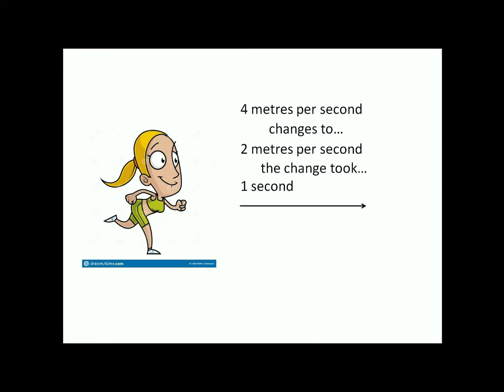Let's show that with an example. Let's say you're running along at 4 meters per second. And then you change your speed to 2 meters per second. And let's say you do that in just 1 second. So you're running along 4 meters per second. And then you suddenly, over 1 second, just change to 2 meters per second.